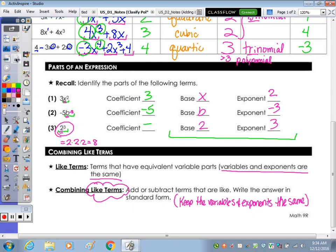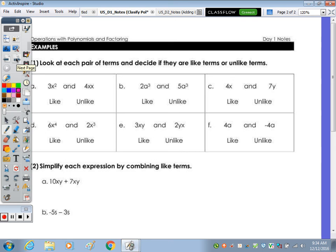So on the back, at the top, it just says, look at each pair of terms and decide if they are like or unlike terms. So A, we have an x squared term and an x times x. Well, that's the same as x squared, so these would be like. We're just focusing on that variable and exponent piece.